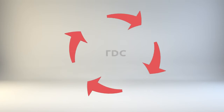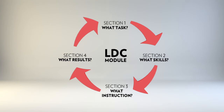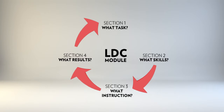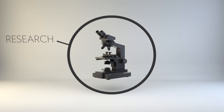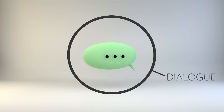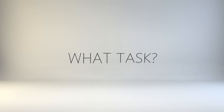LDC modules have four components: what task, what skills, what instruction, and what results. The module provides a blueprint for integrating content and the Common Core in a two to three week instructional plan, which engages students in reading, research, dialogue, and writing about important topics and issues. This video is designed to assist teachers in constructing the What Task section of an LDC module.